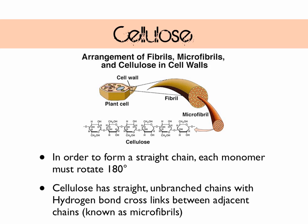Cellulose has straight unbranched chains with hydrogen bonds cross-linking the adjacent chains, forming structures called microfibrils. Hydrogen bonds on their own are relatively weak, but a large number of them together makes cellulose really, really strong. Think of it like toddlers - one toddler wouldn't be a problem, but lots of toddlers together and you'd be overwhelmed pretty quickly.